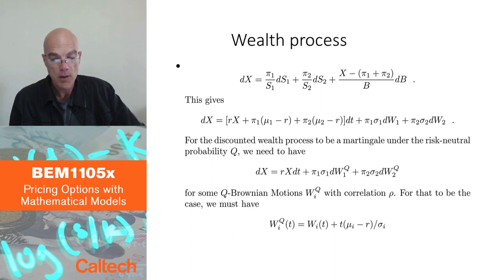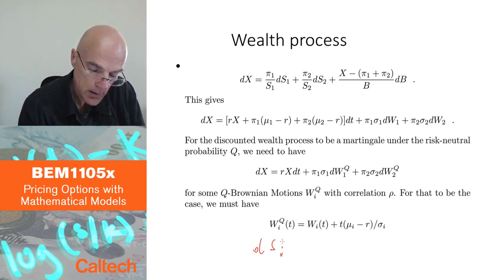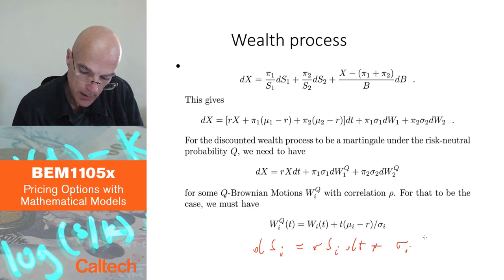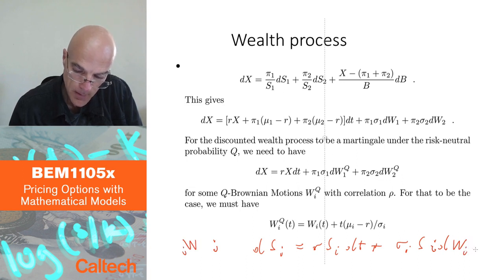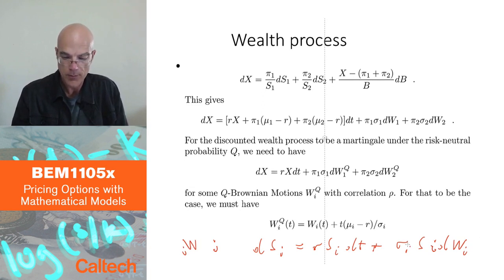So that's the wealth process. This is WiQs, which means that in our model, which means that the dSi under Q is just going to be R Si dt plus sigma i Si dWi t. Exactly the same as we had before. You just replace mu i by R, the risk-free rate.